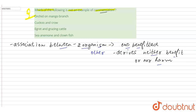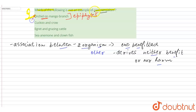The first option is orchid on a mango branch. This is an example of commensalism, and such organisms are known as epiphytes. So this is an incorrect option because it is indeed an example of commensalism.